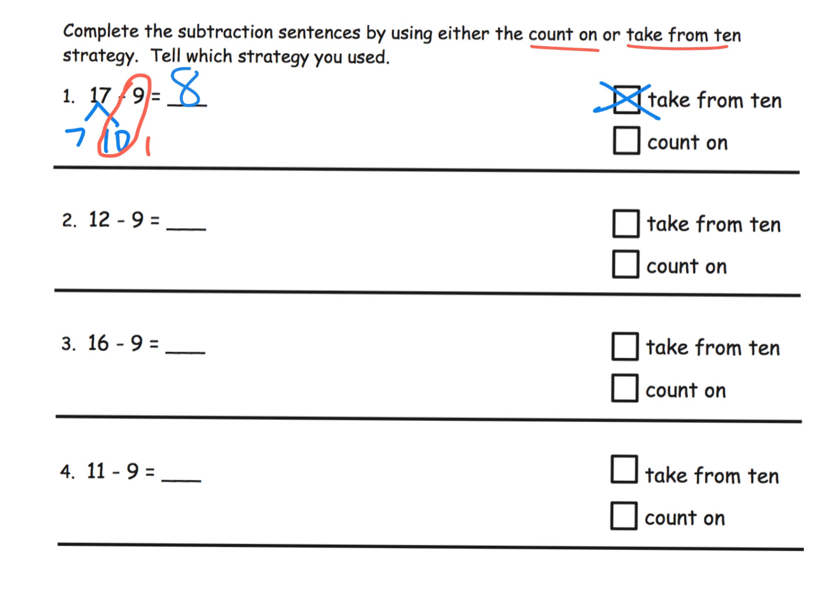I'm gonna skip all the way down to 11 minus 9, and on this one I'm probably gonna use the count on method. I'm gonna punch the air with a fist and say 9, and then I'll say 10, 11.